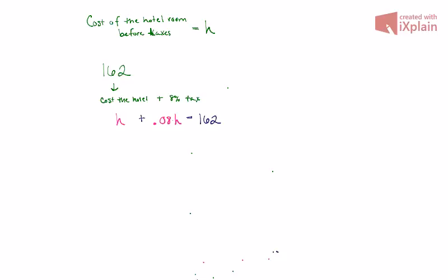If we clean this up, note that the coefficient in front of this h is a 1. If we combine like terms, which we can on the left-hand side because both have a variable of h, this becomes 1.08h equals 162.